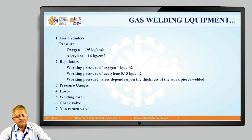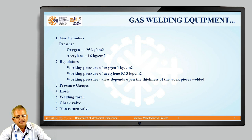In a typical gas welding equipment setup, the oxygen gas cylinder has a pressure of 125 kg per square centimeter and acetylene is at 16 kg per square centimeter. We use regulators to regulate the gas available at high pressure in the cylinder, and through the regulators we get the fuel gas at the tip of the torch for combustion at working pressure.